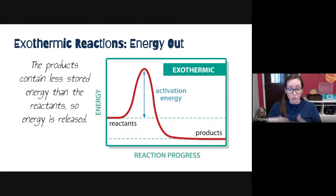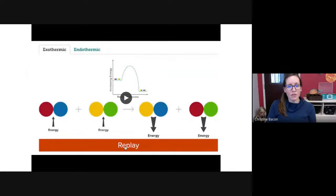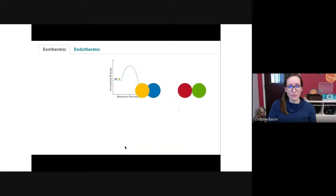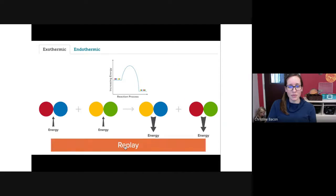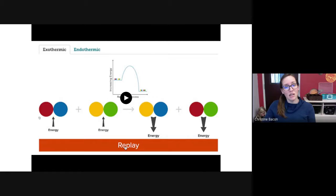Think about a campfire — you're watching a combustion reaction happen and you warm your hands by the heat, the energy given off by that reaction. That's an exothermic reaction. All combustion reactions are exothermic. In the simulation, you can see energy is required to break atoms apart — that is the activation energy. And when those bonds reform in the products, they give off more energy than was needed to break the bonds in the reactants.